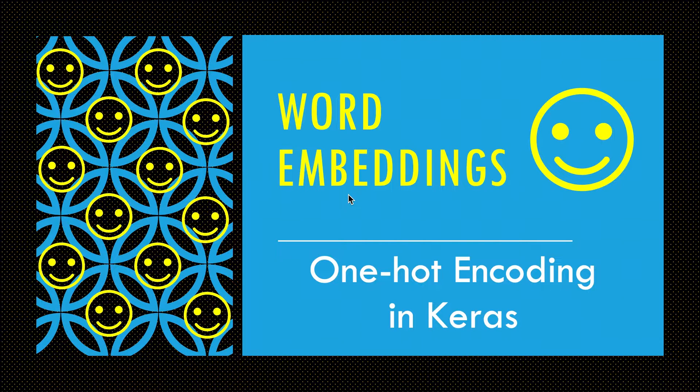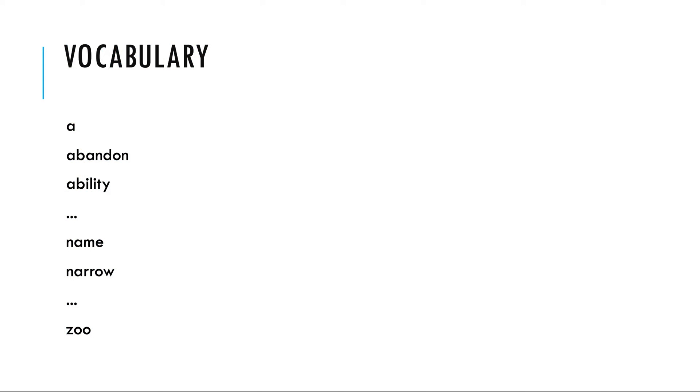Continuing our discussion on word embeddings, we will look at how to do one-hot encoding in Keras. So our ultimate goal would be to calculate the embedding matrix. If this is our vocabulary and let's say its size is 10,000